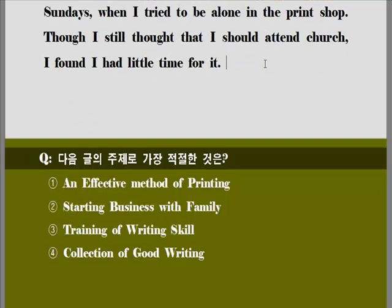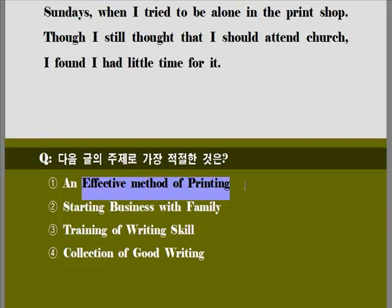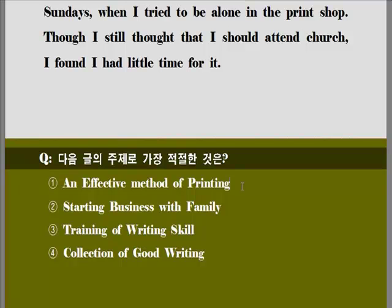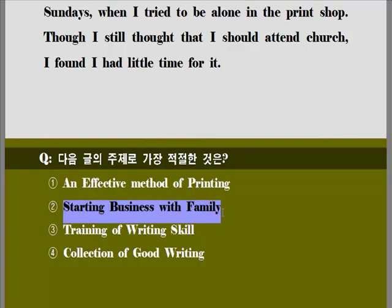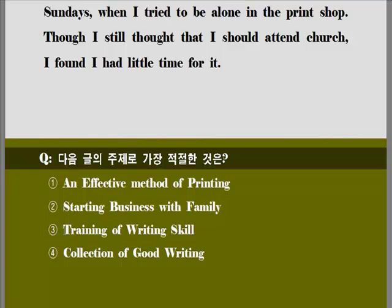문제 확인해 보겠습니다. 다음 글의 제목으로 가장 적절한 것은? 첫 번째, 'ineffective method of printing', 인쇄에 효과적인 방법, 전혀 상관이 없습니다. 두 번째, 'starting business with a family', 가족과 함께 사업을 시작하는 것, 전혀 연관성이 없습니다. 세 번째, 'training of writing skills', 글쓰기 훈련. 네 번째, 'collection of good writing', 좋은 글을 모으는 것. 지금 무엇을 하고 있습니까? 좋은 글을 쓰고자 노력하고 있는 거죠. 야근한 후에도, 아침 일을 시작하기 전에도, 일요일에도 열심히 노력하고 있는 거죠. 바로 세 번째가 정답입니다.